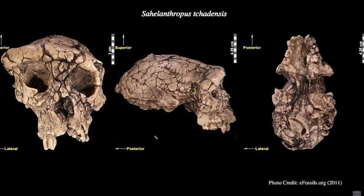In looking at this specimen, there are a number of arguments that have been evoked for why it's a hominin. Recall that the two most commonly argued features to indicate the origins of hominins are bipedality and reduction in canines. Now this specimen has a fairly large canine — still diamond-shaped with a projecting point — but it's not a huge canine, especially in the context of the large superorbital torus and other potentially sexually dimorphic characters. The discoverers have argued this is actually a male on the basis of these robust facial features.